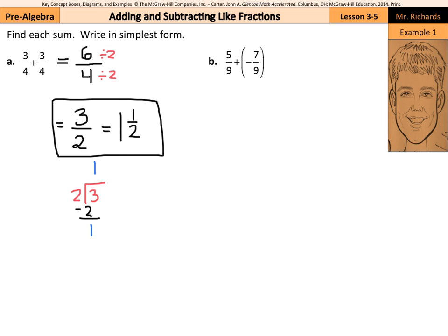1b, 5 ninths plus negative 7 ninths. Well, let's look at this as 5 over 9 plus a negative 7 over 9. Let's take that negative up with the numerator. And so we have 5 plus negative 7, which is negative 2 over 9. And negative 2 ninths is our simplified solution.